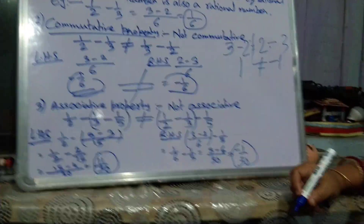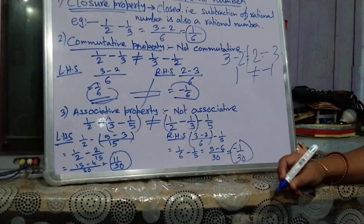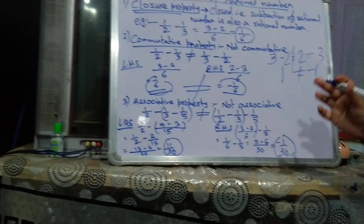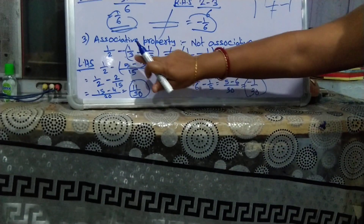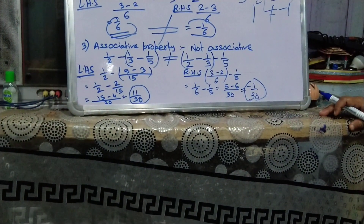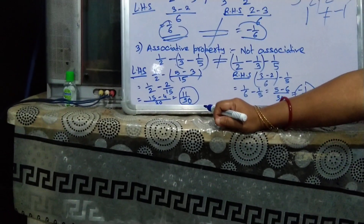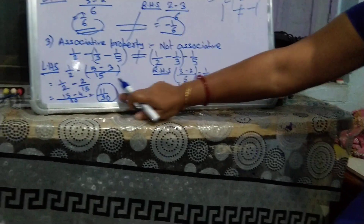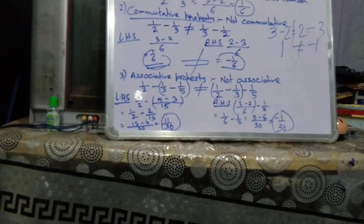Next is associative property. We have seen in addition that addition is associative. Now if we take 1/2 minus (1/3 minus 1/5) on the LHS, and on the RHS (1/2 minus 1/3) minus 1/5, LHS gives 11/30 whereas RHS gives minus 1/3. So LHS is not equal to RHS, meaning subtraction is not associative.